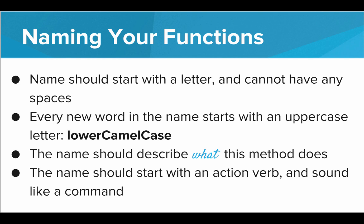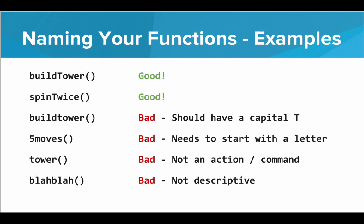The name should describe what the method does, and it should start with an action verb — it should sound like a command. We're giving Carol a command, so the function should sound like an actual command, like sit, or stay, or roll over. So let's look at some examples of naming functions. This first one, buildTower — that one's looking pretty good. SpinTwice — that looks good too. Proper format, it's an action verb.